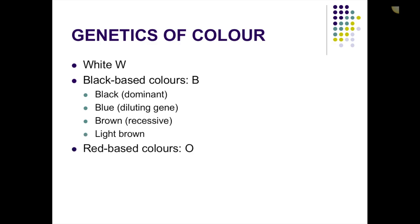The genetics of colors can get really interesting and dynamic, and there's a lot that plays into it, so we're only going to brush the surface here. White is capital W, black base colors are capital B, red base colors are capital O. For black, we have black dominant, blue is the diluting gene, brown is recessive, and light brown is essentially a diluted recessive black gene. Cream is the diluting gene secondary to red the dominant. So cream is a variation of red, and gray or blue is a variation of black.